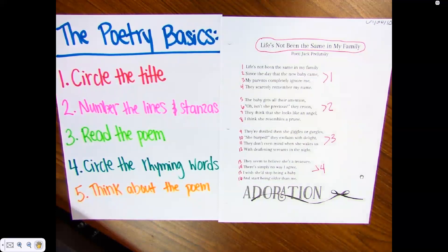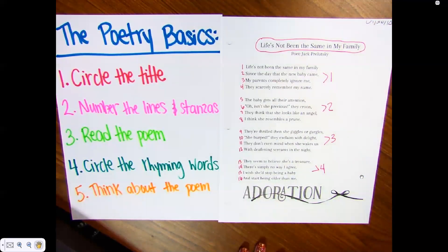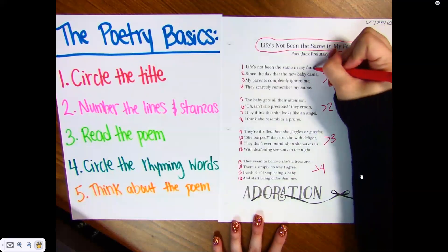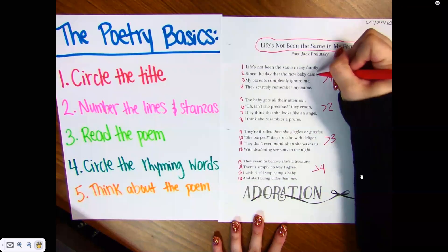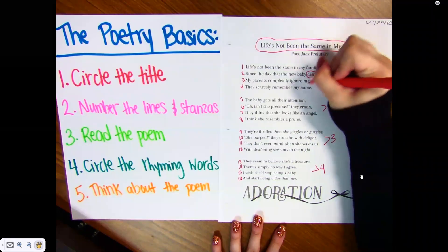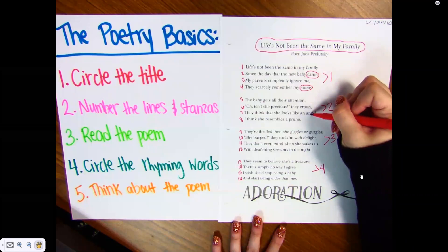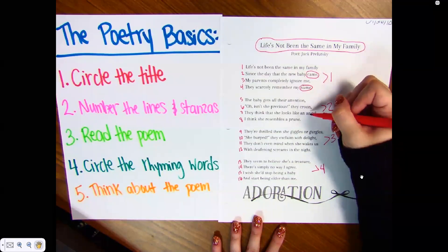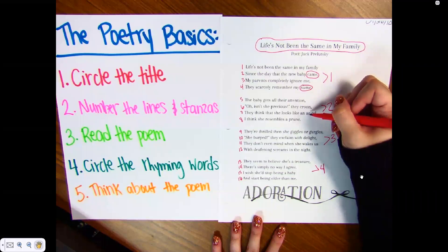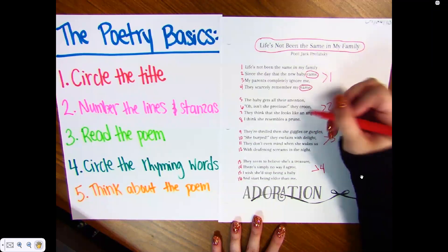Now that I've read the poem, I need to circle my rhyming words. Remember, rhyming words always come at the end of the line. So I'm looking at: family, came, me, name. I'm looking at came and name — came, name — I think those rhyme, so I'm going to circle those. Attention, angel — do those rhyme? No. What about croon and prune? Croon, prune — that rhymes, right?